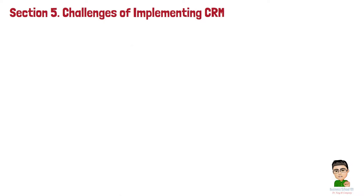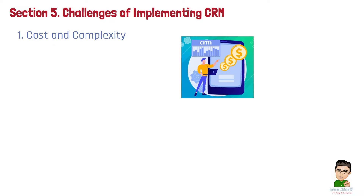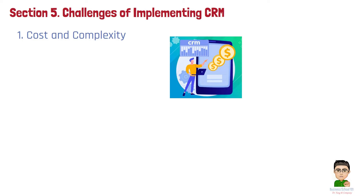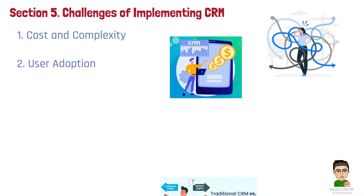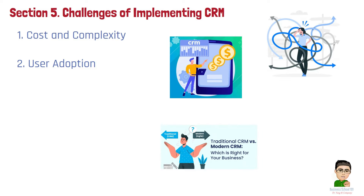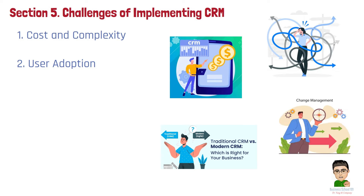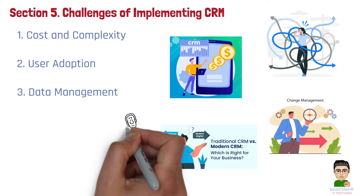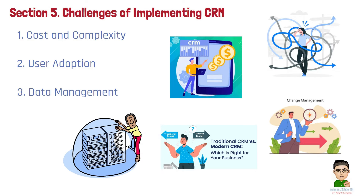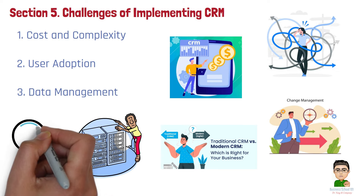Section 5: Challenges of Implementing CRM. While CRM offers many benefits, it can also present challenges. Number 1: Cost and Complexity. Implementing a CRM system can be costly, particularly for small businesses. Customization, integration with existing systems, and ongoing maintenance add to the complexity of CRM adoption. Number 2: User Adoption. Getting employees to fully embrace CRM systems can be challenging, especially if they are used to traditional methods of managing customer interactions. Training and change management are crucial to ensuring smooth adoption. Number 3: Data Management. CRM systems rely on accurate, up-to-date data. Without proper data management practices, the quality of customer insights may suffer, leading to less effective decision-making.